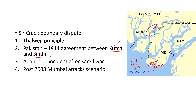India argues that the boundary should rather be the red line. Why does India say the red line should be the boundary? The Indian side argues that we should follow the Thalwek principle, as it is followed throughout the world. This principle says any navigable narrow water body between two sides should be divided half and half. If we divide this water body in half, the red line would be the border. Pakistan argues that Sir Creek is not navigable throughout the year — it becomes navigable only at the time of high tide. India counters that the Thalwek principle should still apply.